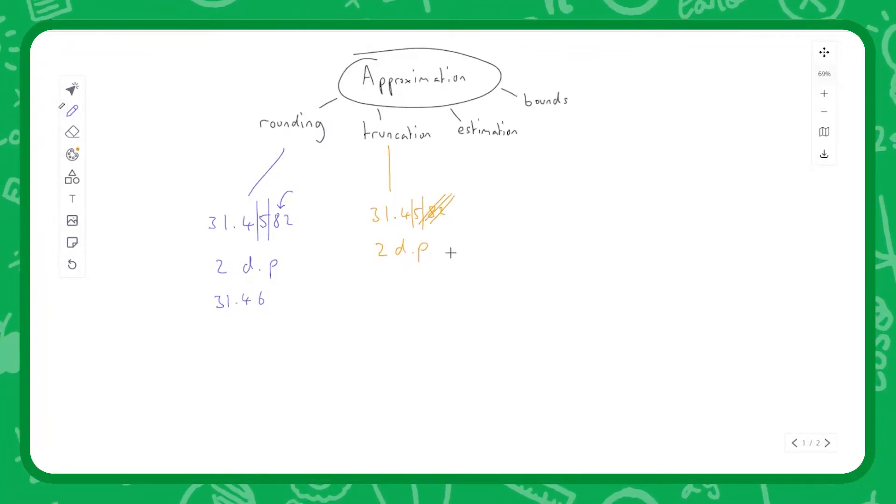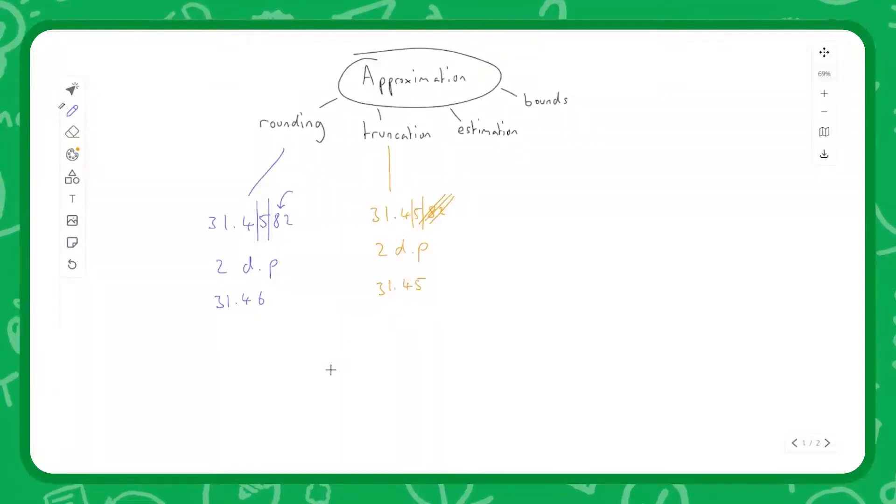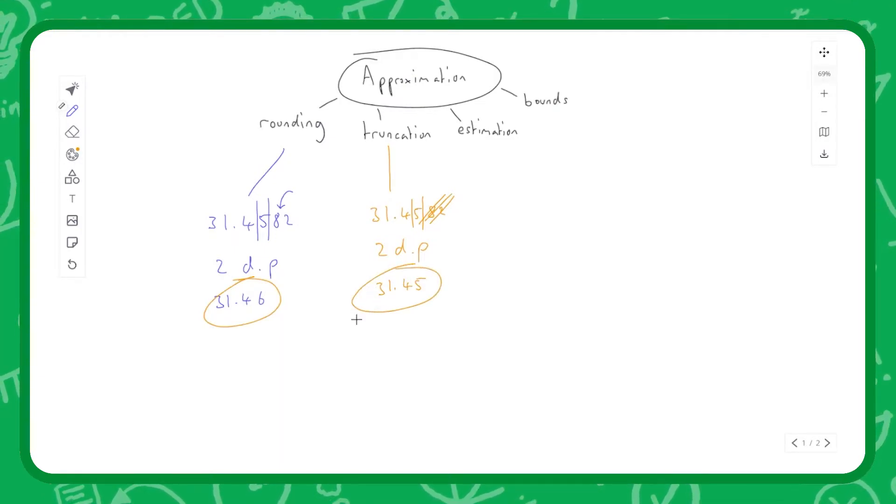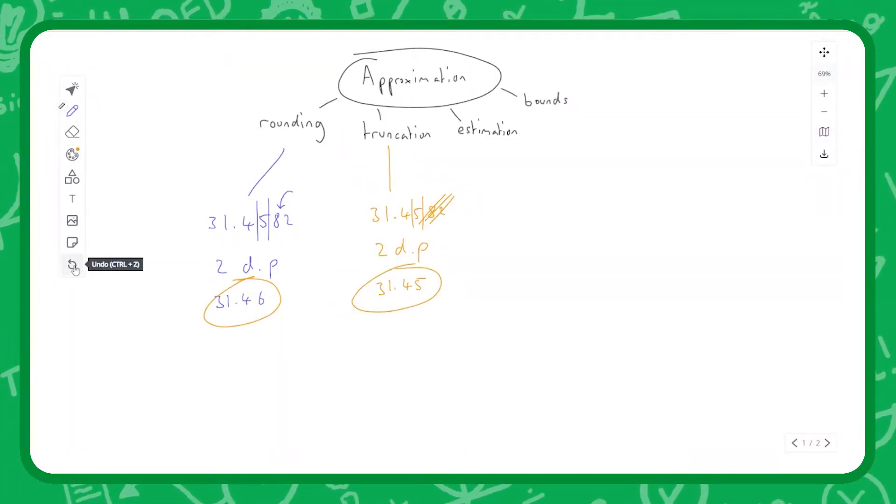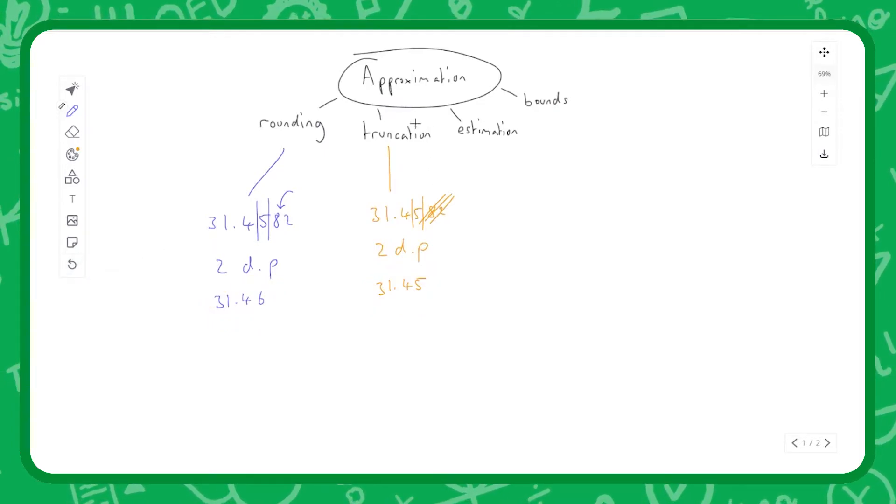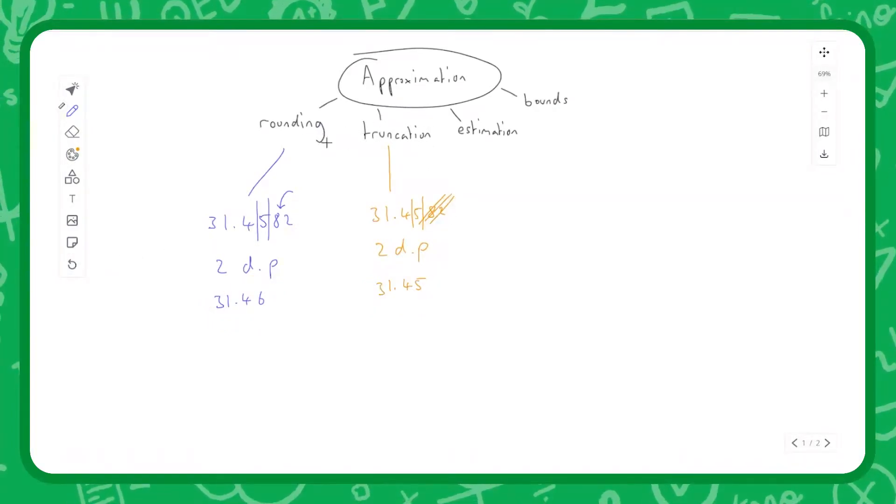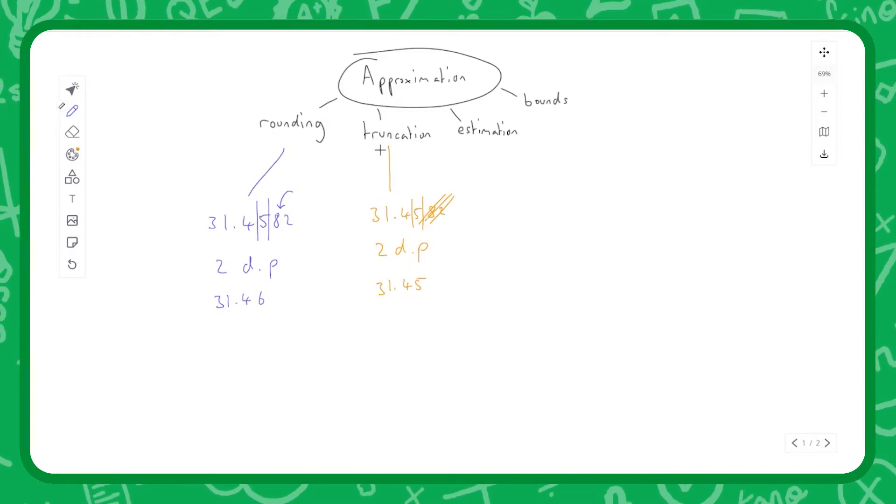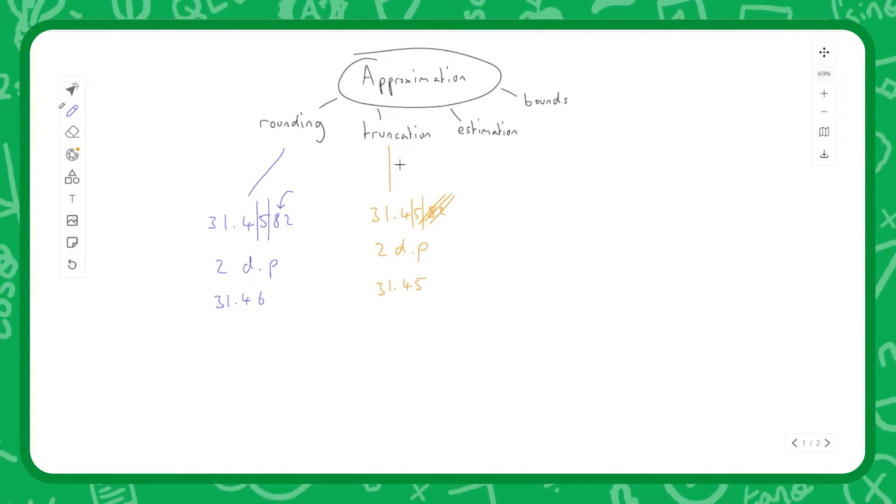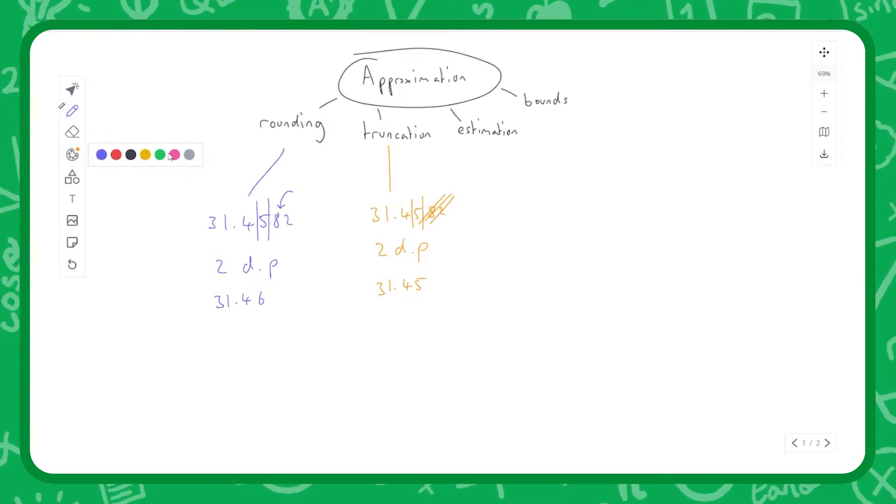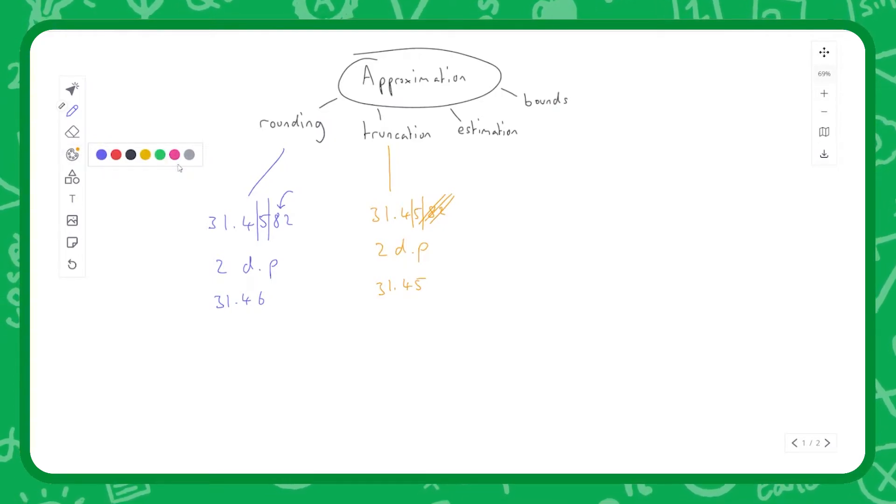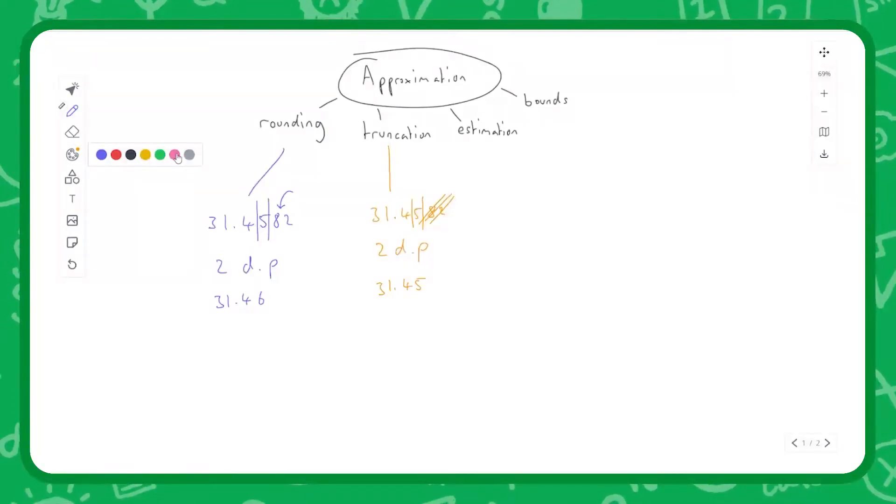That's my second decimal place column - all I do now is just chop off everything else, I just get rid of it, so all I'm left with is 31.45. There's actually no maths at all involved in truncation. If we compare these two values they're different, so we've got to be careful which method we use. Ideally we use rounding. We need to understand what truncation is because that's what calculators and computers use - they have a limited precision and anything beyond that precision will just get chopped off when they're doing their calculations.